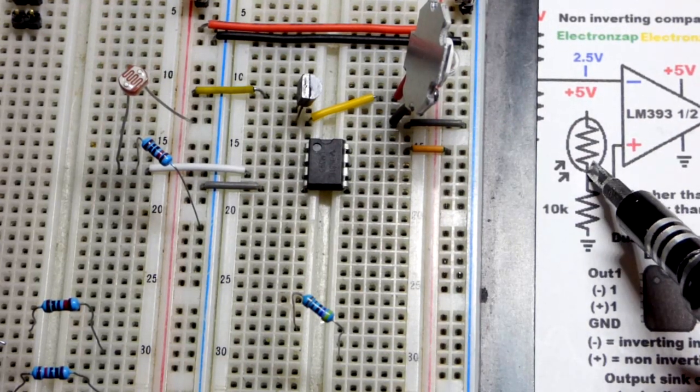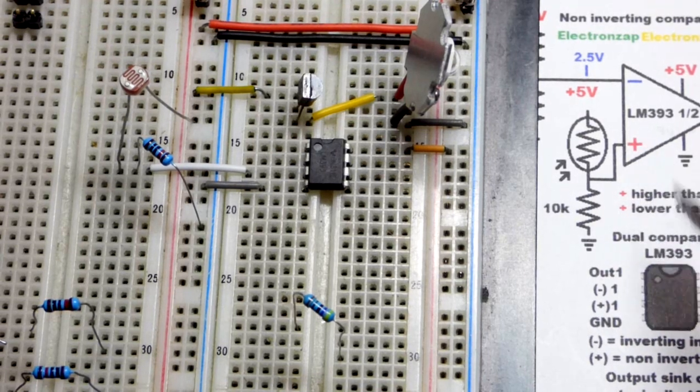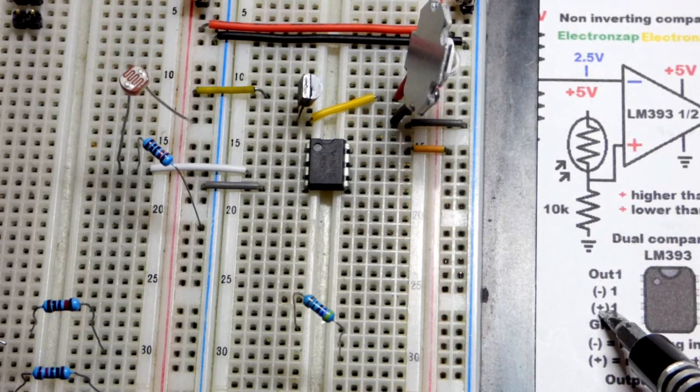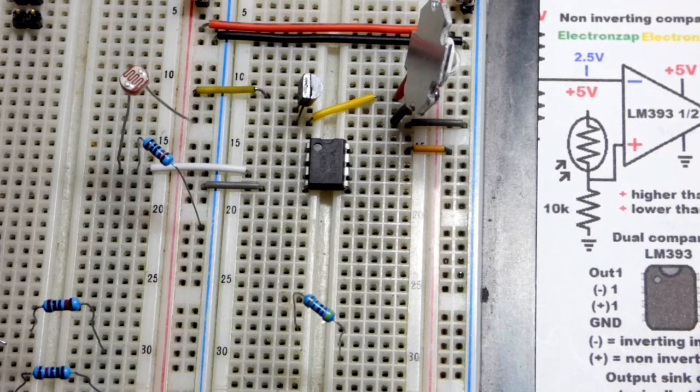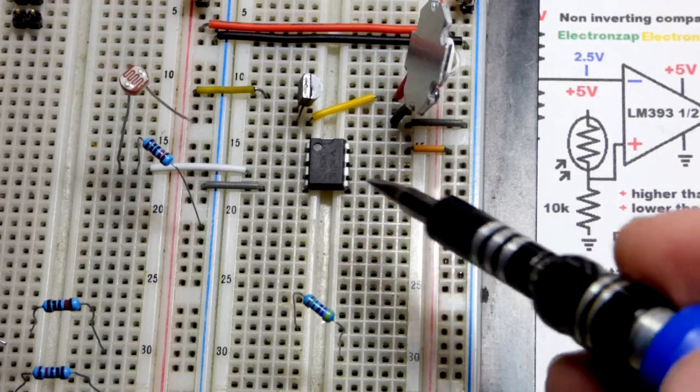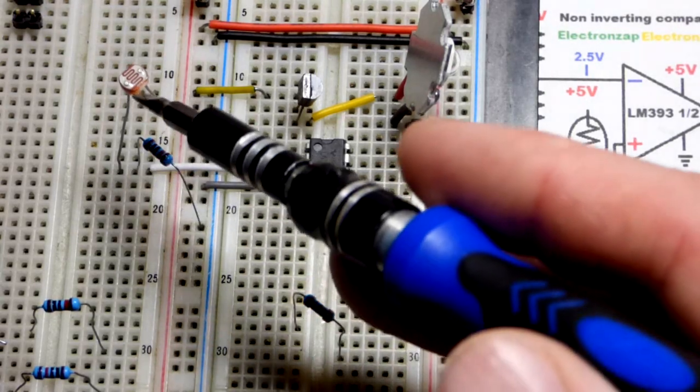We have the light dependent resistor voltage divider here going to the non-inverting input. That's important. The output wants to be more like the non-inverting input, but this is a comparator integrated circuit, not an op amp. We'll talk about that coming up.